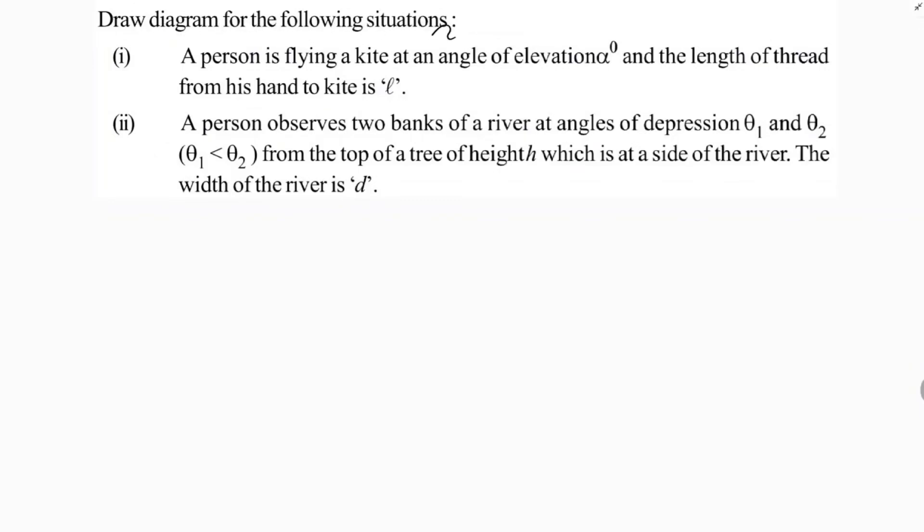Draw a diagram for the following situations. First question: a person is flying a kite at an angle of elevation alpha degrees and length of the thread from his hand to kite is L.